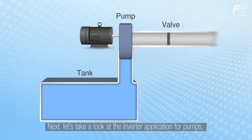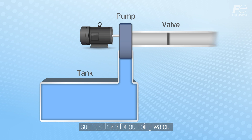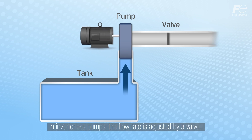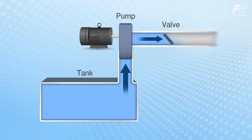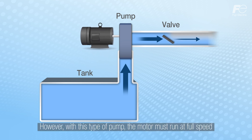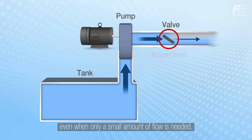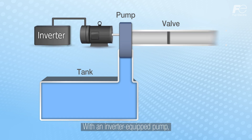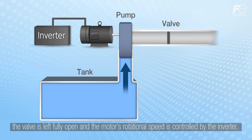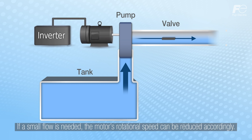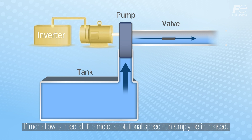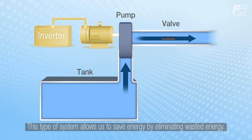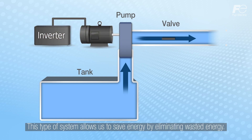Next, let's take a look at the inverter application for pumps such as those for pumping water. In inverterless pumps the flow rate is adjusted by a valve; however, the motor must run at full speed even when only a small amount of flow is needed. With an inverter-equipped pump, the valve is left fully open and the motor's rotational speed is controlled by the inverter. If a small flow is needed the motor's rotational speed can be reduced accordingly, and if more flow is needed the rotational speed can simply be increased. This type of system allows us to save energy by eliminating wasted energy.